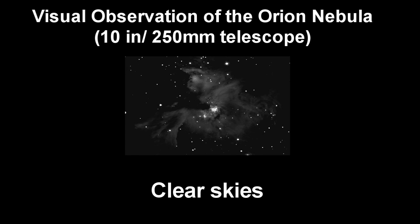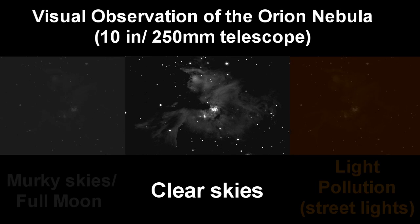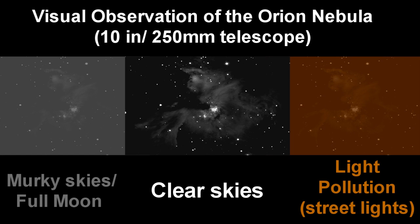If you're looking at faint objects such as nebulae, these tend to be big and fuzzy, so the darkness and the clarity — basically how transparent the sky is — are the principal factors. If your sky is murky, has a lot of light pollution, or there's even a full moon in the sky, you can largely forget about it.